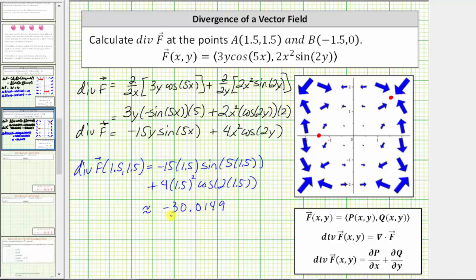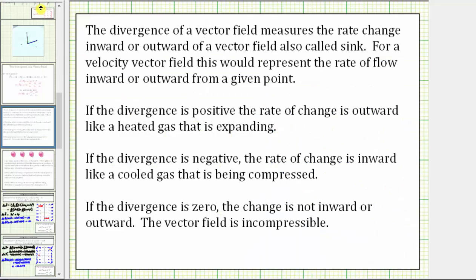Going back to the vector field, notice how at this location the flow is inward. For a quick review: when the divergence is positive, the rate of change is outward, like a heated gas that is expanding. In our case, the divergence is negative and therefore the rate of change is inward, like a cooled gas that is being compressed. If the divergence is zero, the change is not inward or outward and the vector field is incompressible.